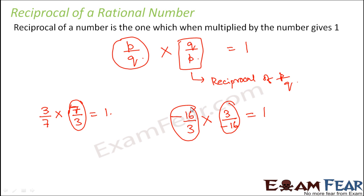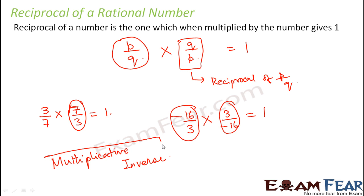Reciprocal is that number which when multiplied by the original number gives 1. The reciprocal of a number is also known as the multiplicative inverse. Why is it called the multiplicative inverse? It is called inverse because we are reversing the number — inversing the numerator and the denominator. It is called multiplicative because the operation involved is multiplication, and when you multiply these two numbers you get 1.